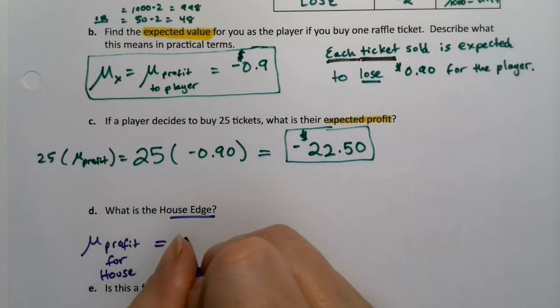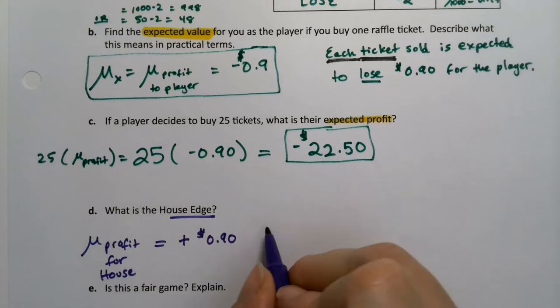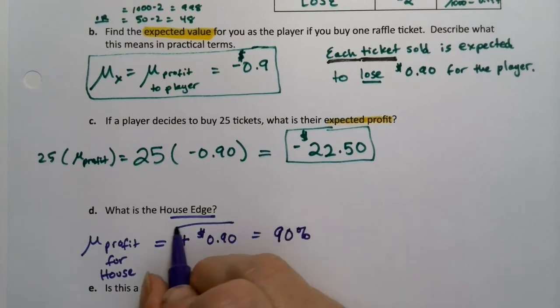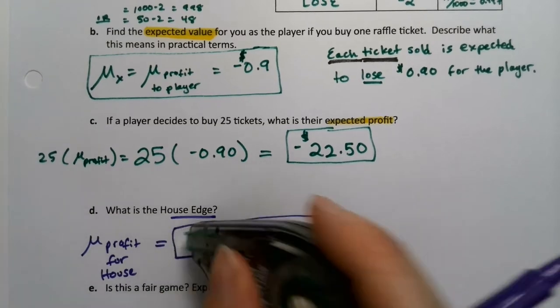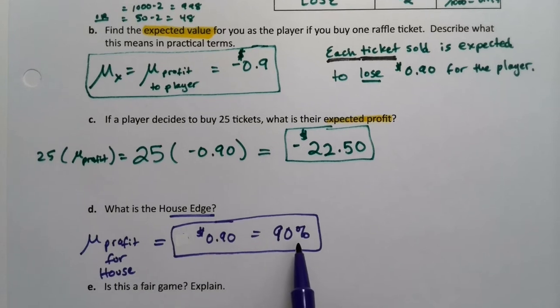A house being the person running the game or the casino. That would be positive 0.90. And they usually write it as a percent. So they usually write as 90%, but either one of those is okay. Because they expect to make 90% off of every ticket they sold.